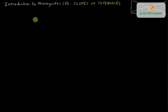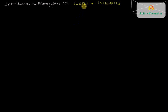This tutorial will begin our introduction to the way waves propagate along waveguides, which happens using total internal reflection. To get started, we're going to talk about the slopes of the electric field when there are interfaces.